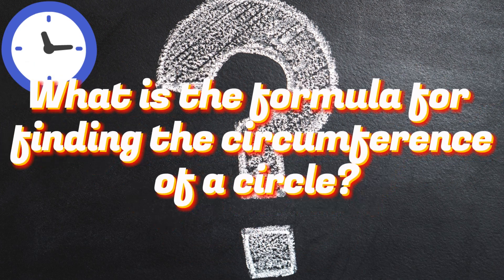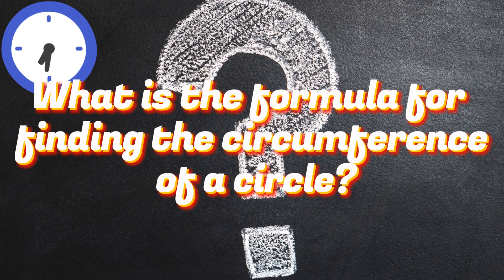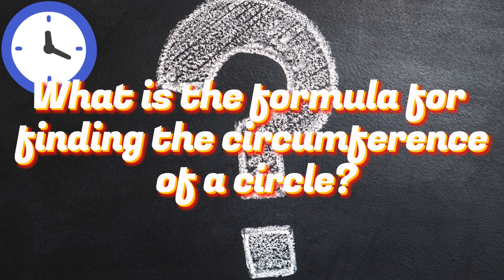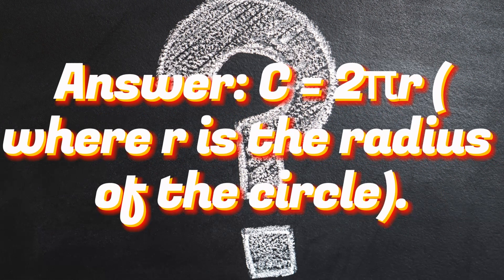What is the formula for finding the circumference of a circle? Answer: C equals 2πr, where R is the radius of the circle.